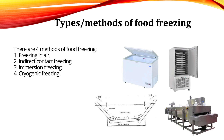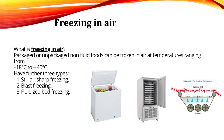There are four methods of food freezing: 1. Freezing in air; 2. Indirect contact freezing; 3. Immersion freezing; 4. Cryogenic freezing. Freezing in air involves packaged or unpackaged solid food frozen in air at temperatures between minus 18 to minus 40°C. There are three types: still air sharp freezing, blast freezing, and fluidized bed freezing.